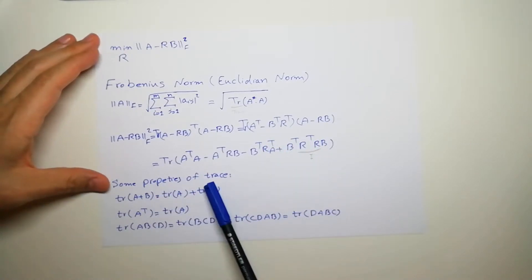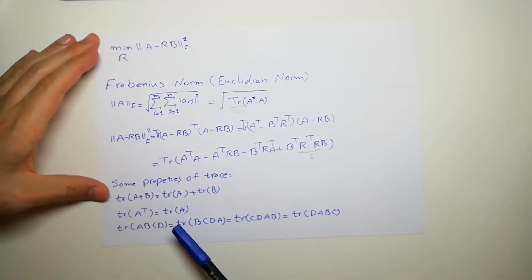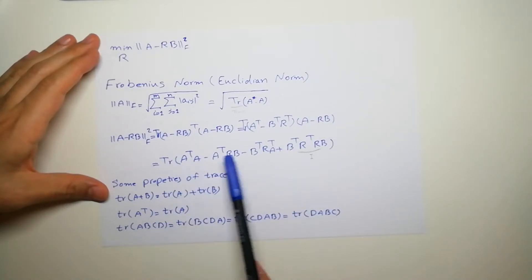Let's review some properties of the trace. We know that trace of A plus B is trace of them separately. We know that trace of transpose of a matrix equal to itself and we have the circulation property that means D could go to the top and the C go to the top and we can circulate them.